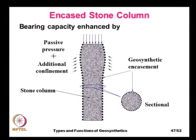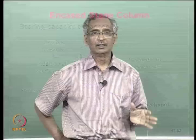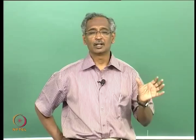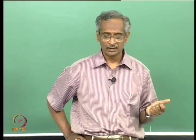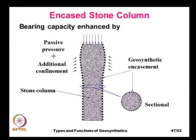It is often very difficult to form a stone column in extremely soft clay with an undrained shear strength less than about 10 kPa — as can occur in marine clays. In all such cases, the stone column can be easily constructed by encasing it inside a geotextile tube.